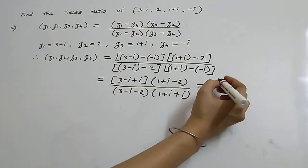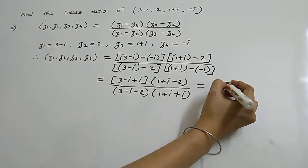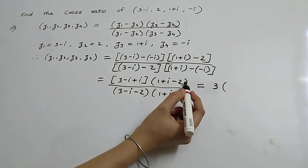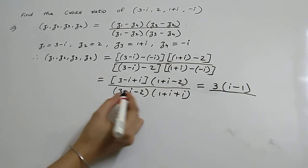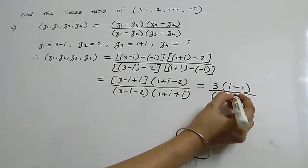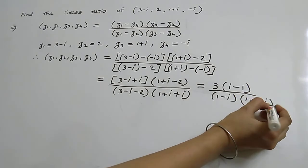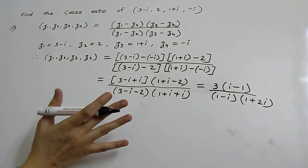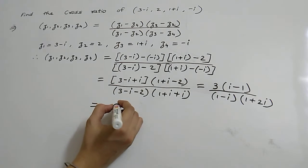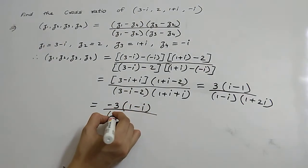Simplifying: -i and +i cancel, so we get 3 times (1 + i - 2) which equals 3 times (i - 1), upon (1 - i) times (1 + 2i). Now we need to eliminate i from the numerator.